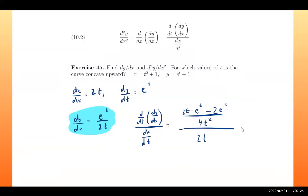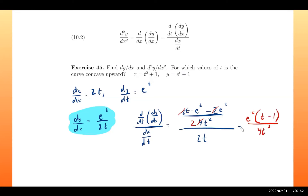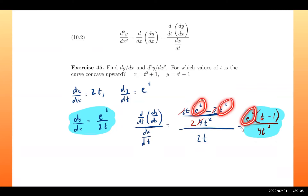We can simplify the expression by factoring out a 2 and canceling, and factoring out e^t. The second derivative simplifies to e^t(t − 1) over 4t³. The 4t³ comes from (2t)² divided by 2t, and factoring out e^t gives (t − 1) for the other factor.